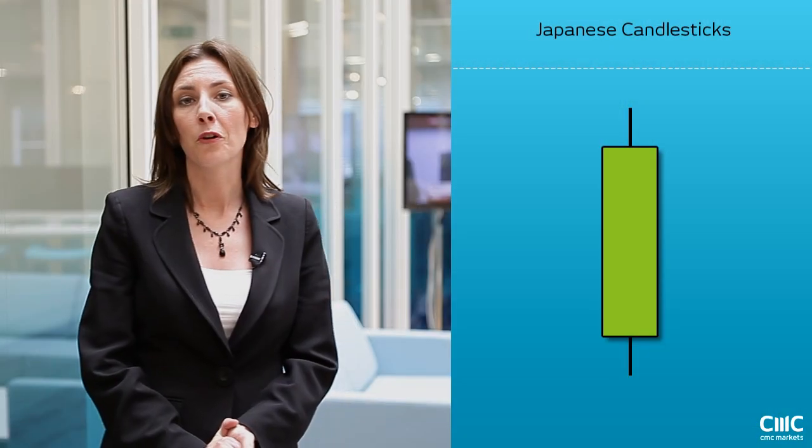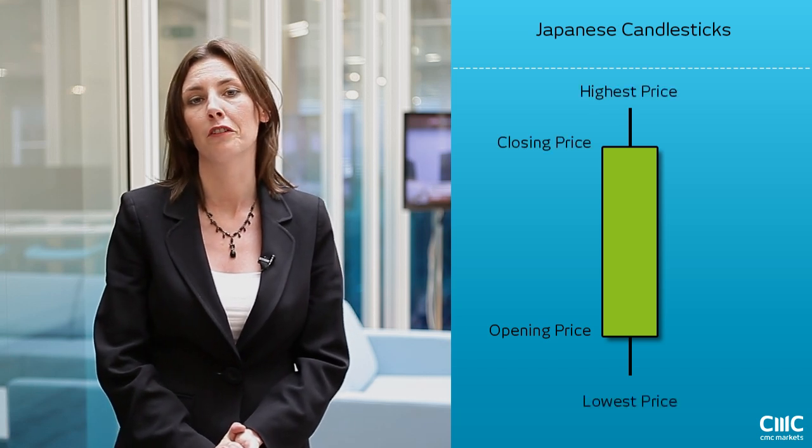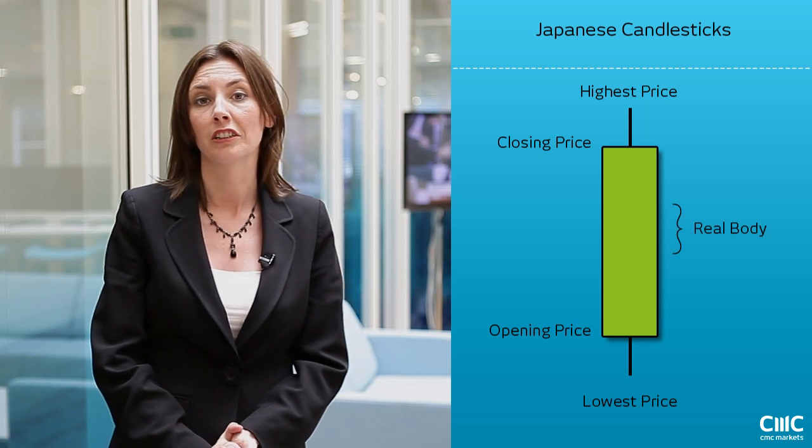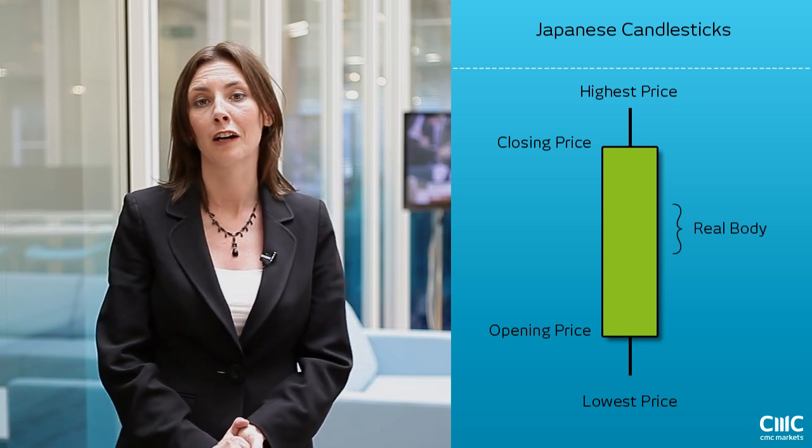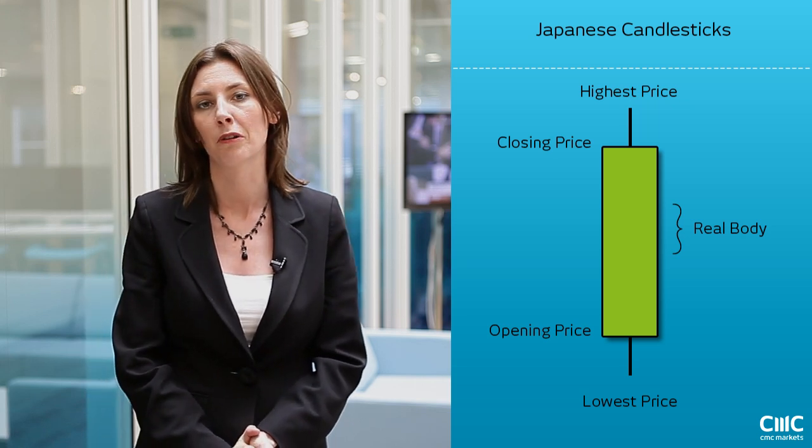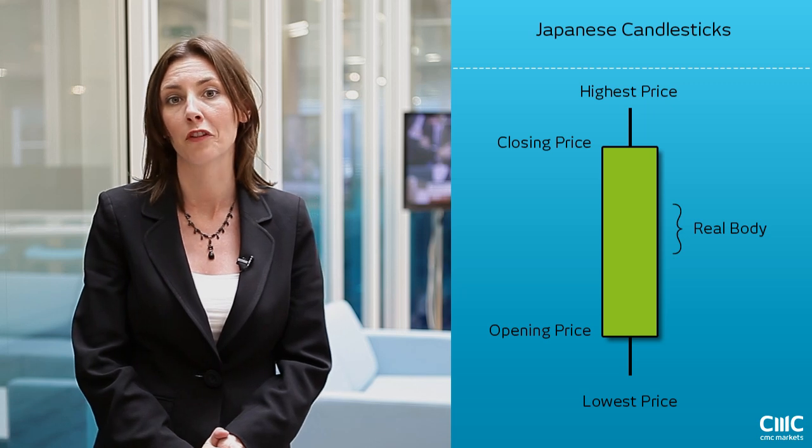Just like the bar chart, it will show you the open price, the close price, and the high and the low of that given period. The real body, where most of the trading action takes place, is often known as the true value, but the single most important bit of information is the closing price because that will often indicate where the next price will be for the stock or index.